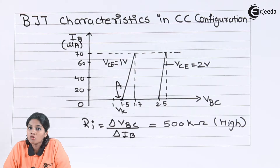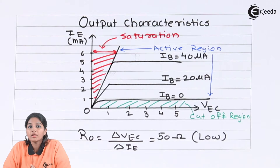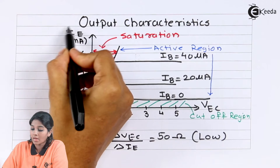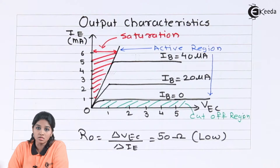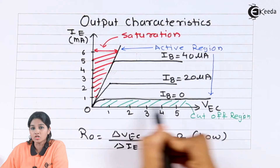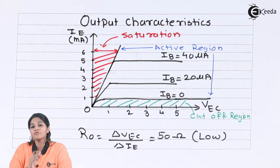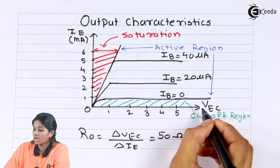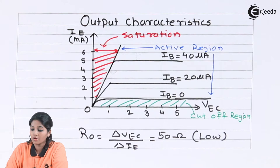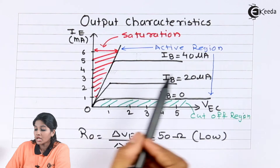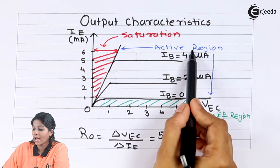Now let's move to the output characteristics of common collector configuration. The output characteristics show a relationship between output current and output voltage for a given input current. In common collector configuration, emitter-collector voltage is the output voltage, emitter current is the output current, and base current is the input current. We plot emitter-collector voltage on the x-axis and emitter current on the y-axis. The characteristic is obtained by setting a value of base current — for example, 20 microamperes — and then increasing collector-emitter voltage. The output characteristics get divided into three regions: saturation, active, and cutoff.